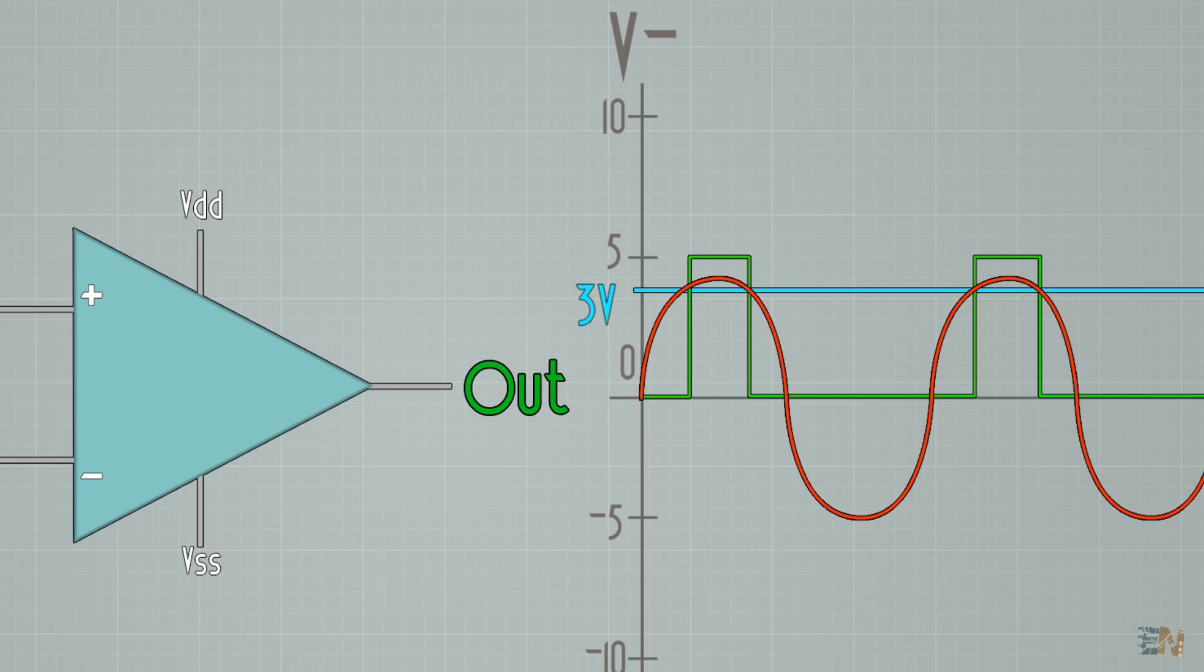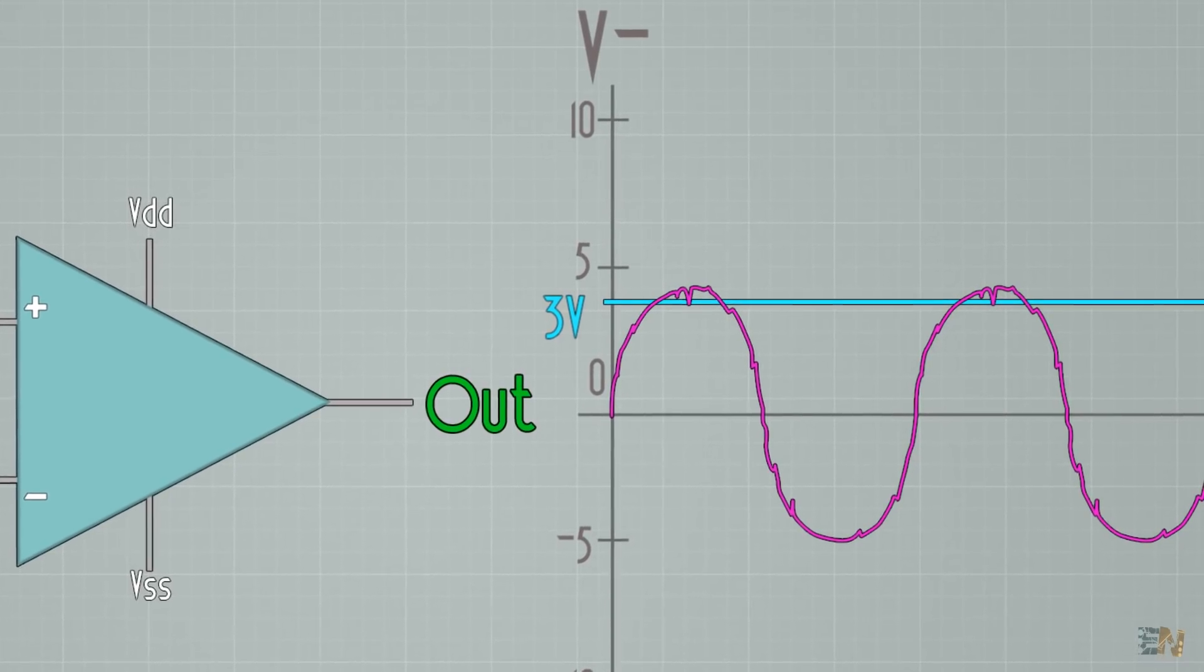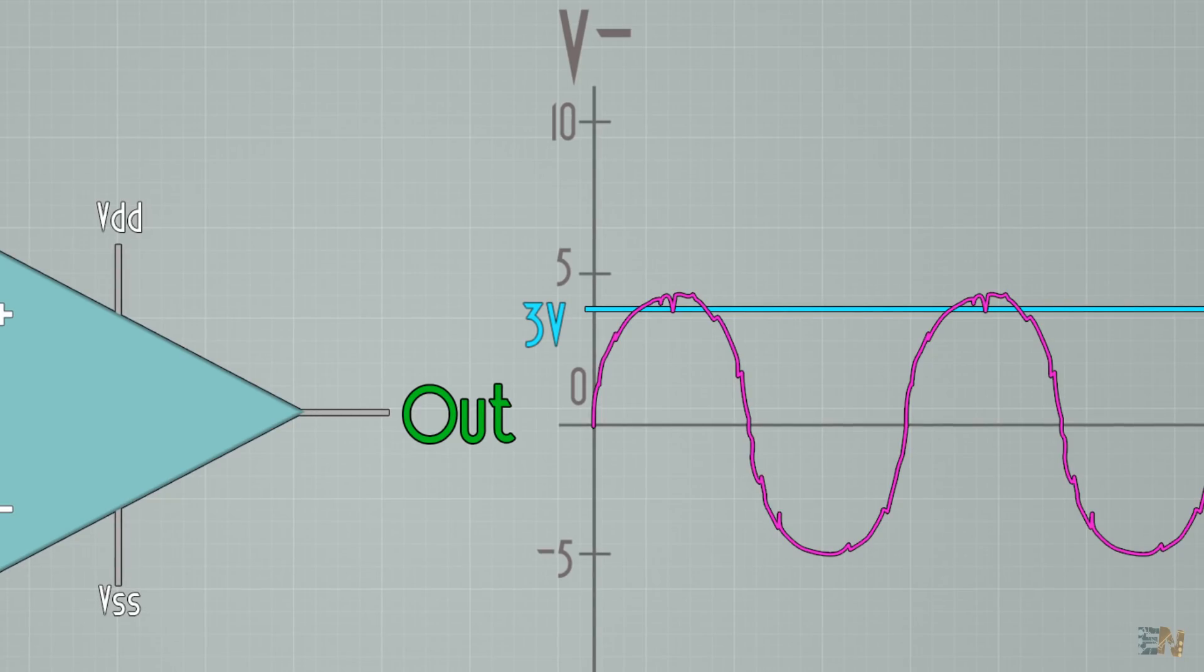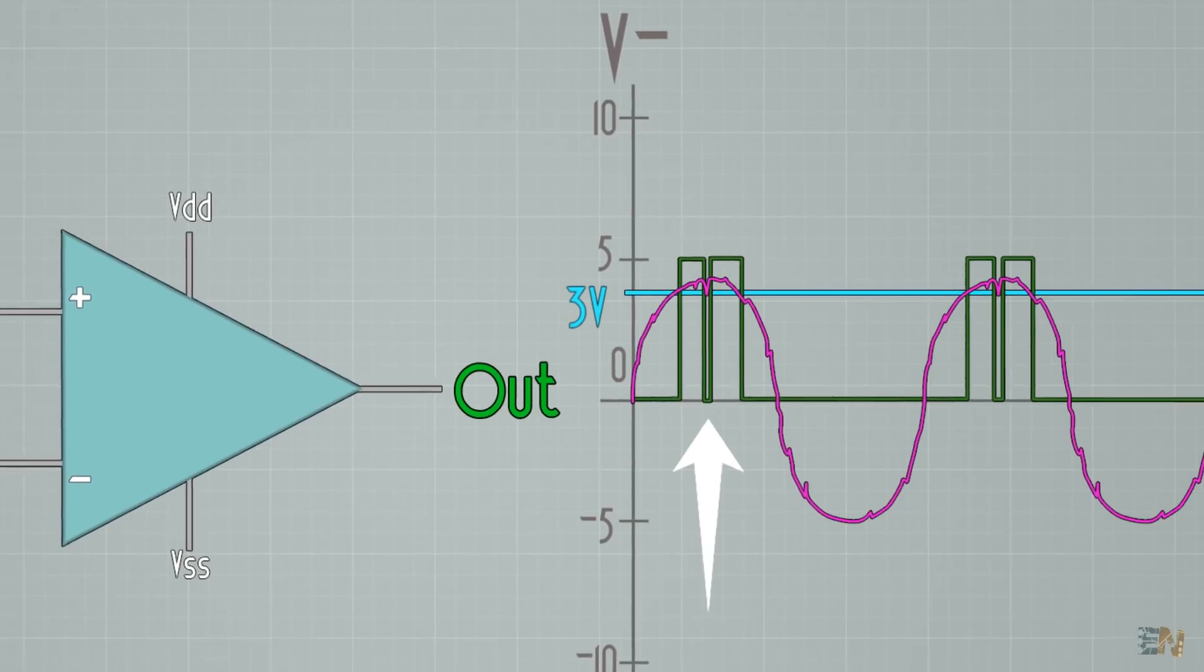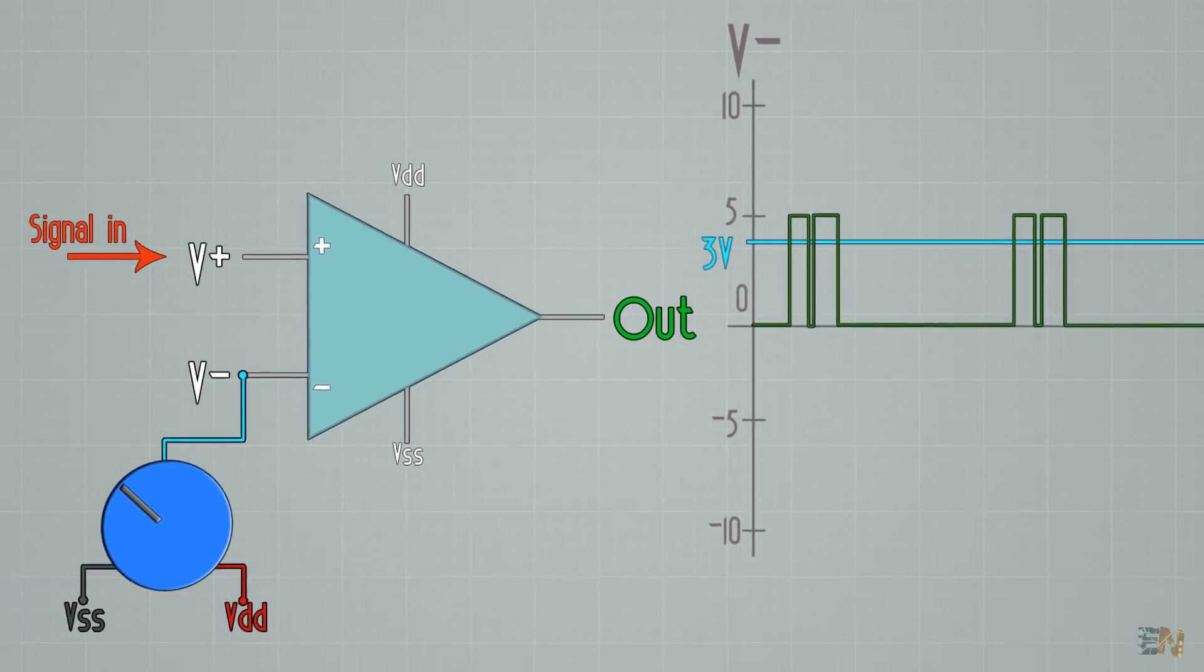But what if the input has noise? Let's do the same but now using this wave. It is the same signal but with some noise. Ok, so right at this oscillation, after the signal passes 3 volts, we have a little bit of noise and a small ripple that goes below 3 volts. That will result in a short low pulse at the output, which would be an error since we don't want that.